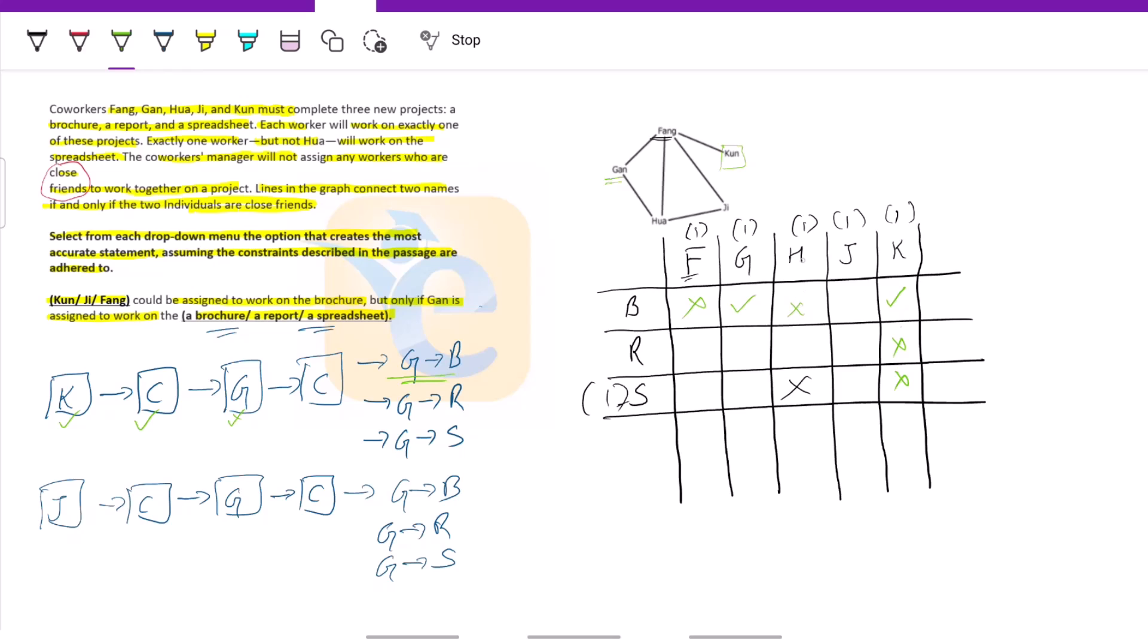Already two crosses in the H column. So we can put a tick pretty confidently here. And if H is working on report, then G cannot be working on report. G also cannot be working on report. So we have crosses here. Did we violate any condition till now? We have not violated any conditions. Now, one of these two places I can put a tick. Say for example, I put a tick for J in brochure. F and H cannot be here. F and H are not there already. No problem. Then here it would be a cross and here one tick needs to be there. So there will be a tick here, which means there will be a cross here. Again, no conditions are getting violated. So this can be there.